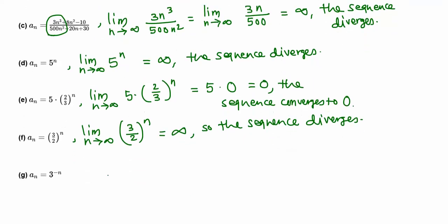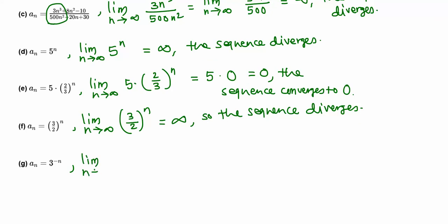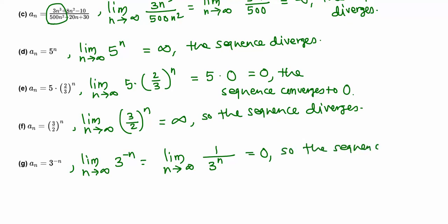Next, the limit as n goes to infinity of 3 raised to the negative n, which equals 1 over 3^n. When n goes to infinity, 3^n becomes very large — multiplying 3 infinitely many times — so 1 over infinity is 0. This sequence converges to 0.